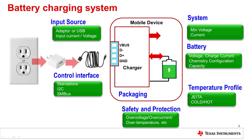First we'll review the battery charging system. The battery charging system consists not only of the battery charger itself but also its input source and the host processor microcontroller that is controlling the charger. The input source could be either an adapter or USB port and provides input current and voltage. The control from the host processor microcontroller could be in the form of I2C or SMBus commands, reads and writes that change certain registers in the charger, or it could be GPIO pins that change the state of the charger's input pins.